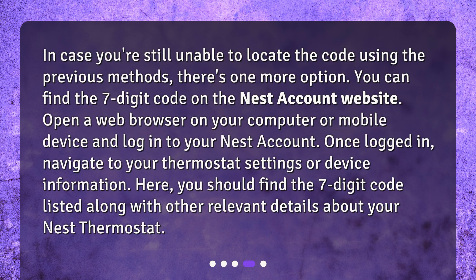If you're still unable to locate the code using the previous methods, there's one more option. You can find the seven digit code on the Nest account website. Open a web browser on your computer or mobile device and log into your Nest account. Once logged in, navigate to your thermostat settings or device information. Here you should find the seven digit code listed along with other relevant details about your Nest thermostat.